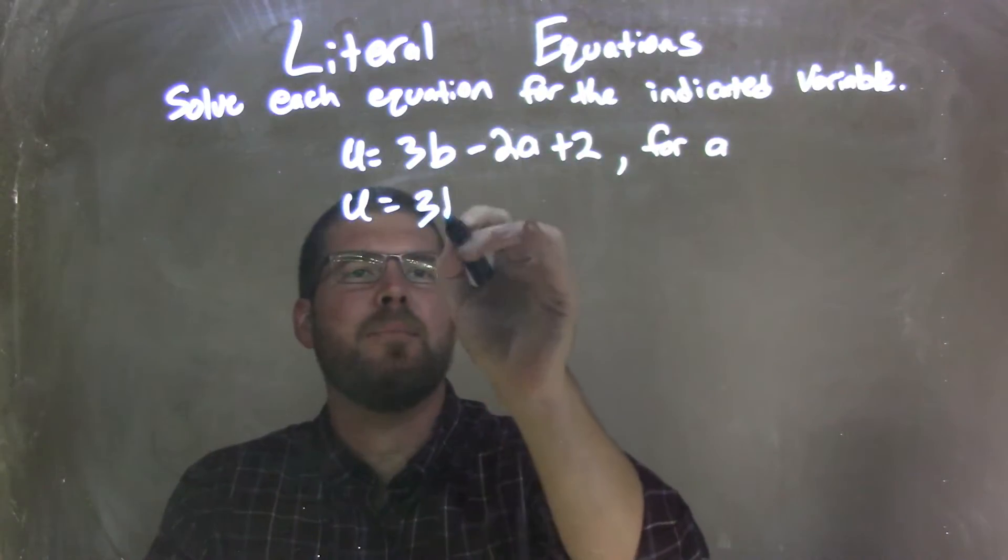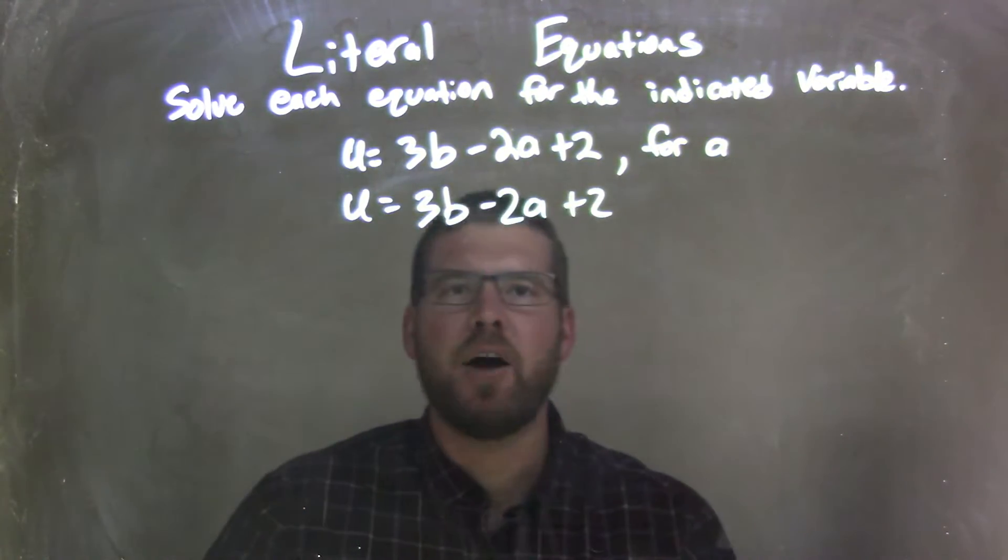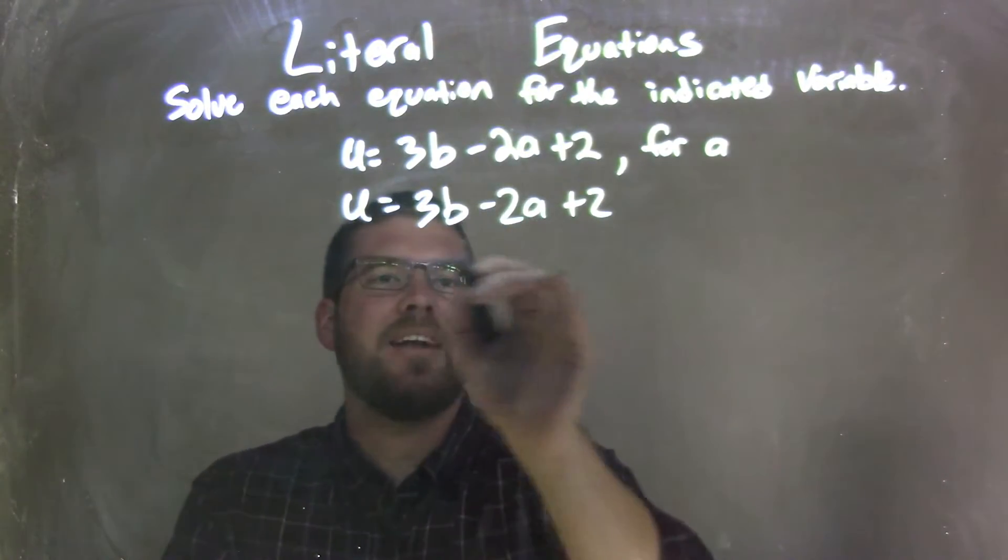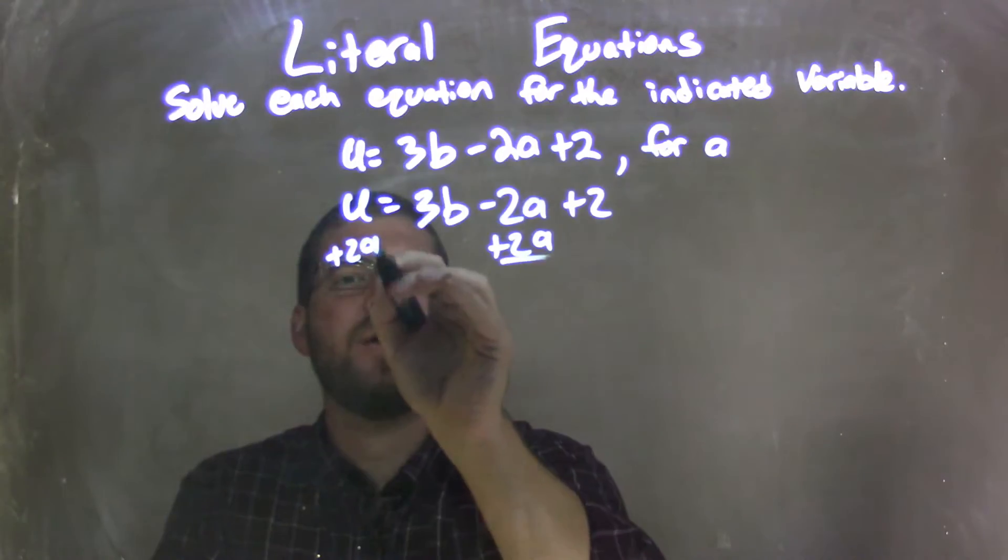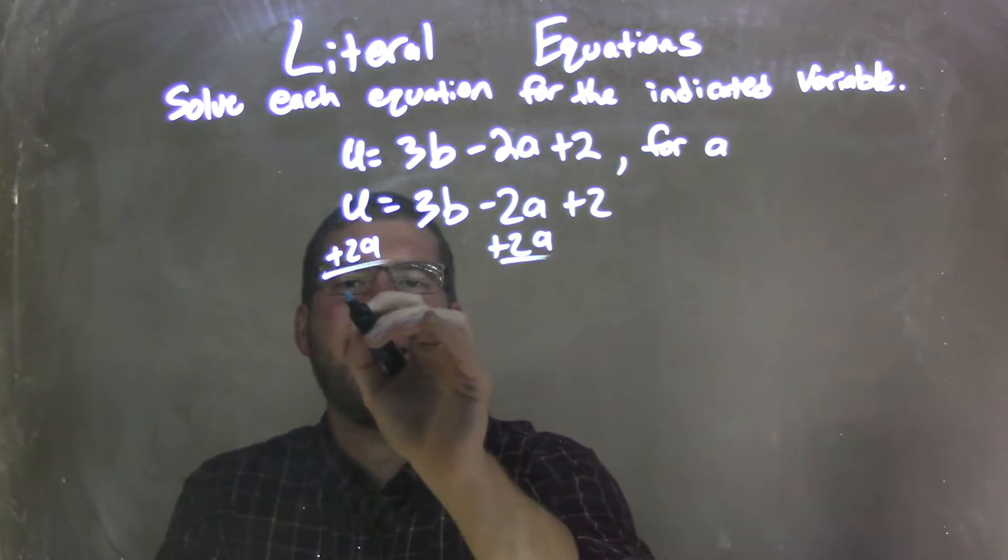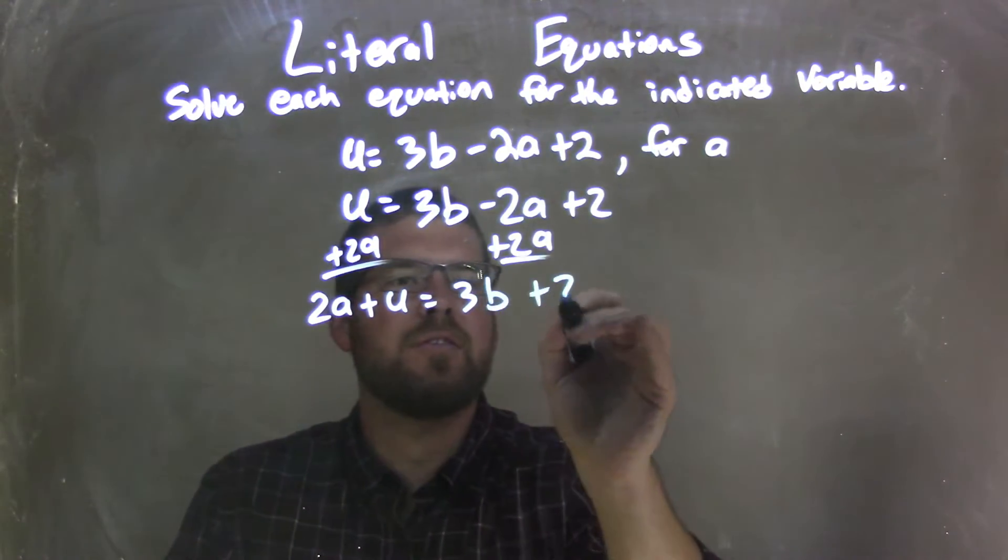So we have u equals 3b minus 2a plus 2. So let's get a by itself. Well, why don't I do this? I'm going to add 2a to both sides. Let's do this way first, actually. I like that better. We add 2a to both sides, and that gives me 2a plus u equals 3b plus 2.